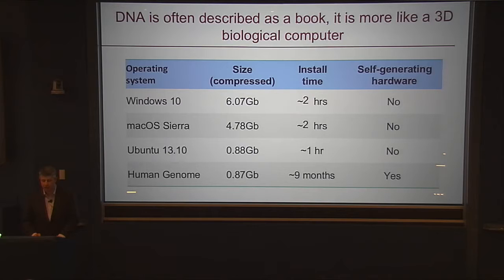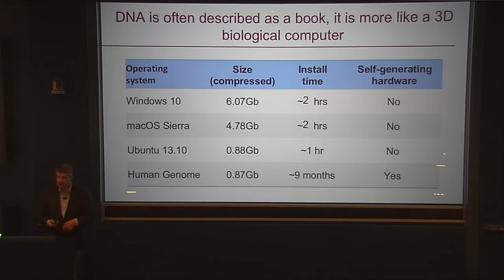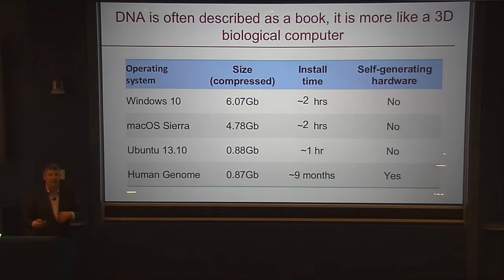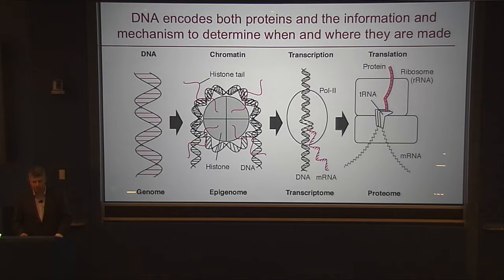If we could truly understand how this amazing computer worked, we would be a lot closer to understanding what humans are. Just consider how amazing this feat of engineering is: if I were to buy a Windows computer, it would be obsolete within three or four years and takes six gigabytes of data to run. The human genome has survived for tens or hundreds of thousands of years, is almost ten times smaller than the Windows operating system, and has the additional benefit that it self-generates its own hardware. So what can this remarkable three-dimensional computer tell us about biology?